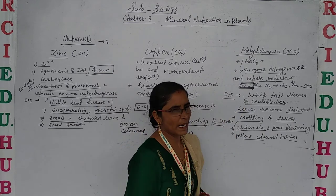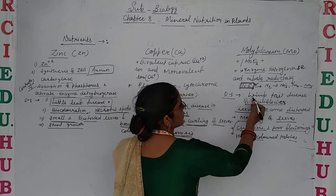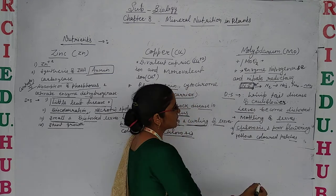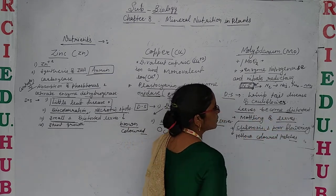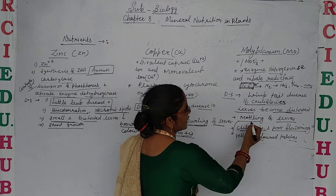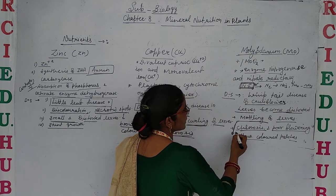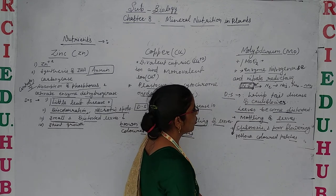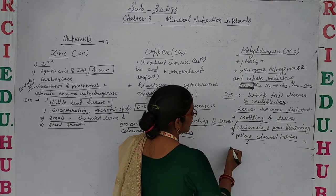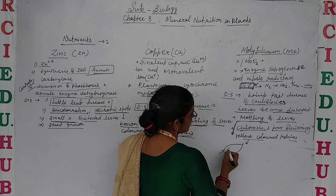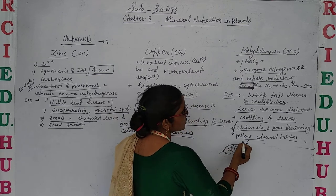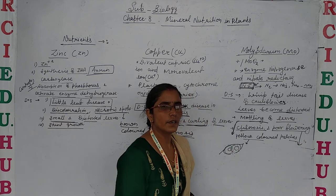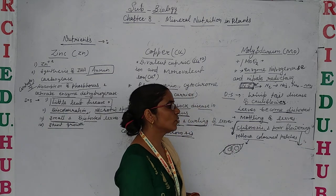Deficiency disease of molybdenum: it causes whiptail disease of cauliflower. In that, leaves become distorted and change their shape. As well as mottling of leaves occurs — in the beginning the leaves have some yellow colored patches, and slowly those yellow colored patches increase in size, causing chlorosis of the leaves. It also reduces flowering, causing poor flowering.